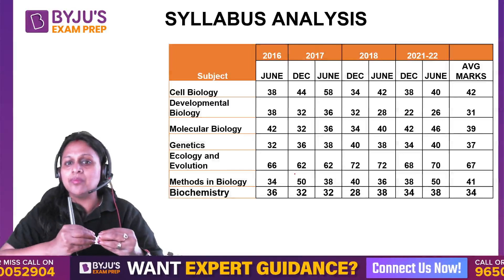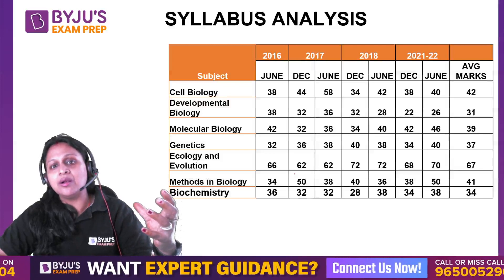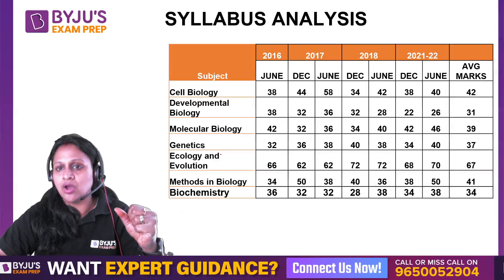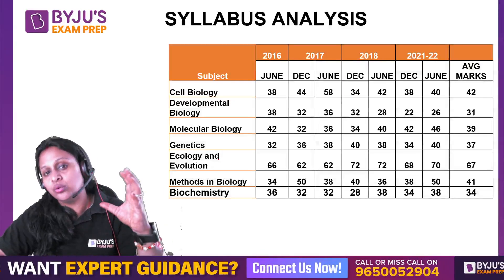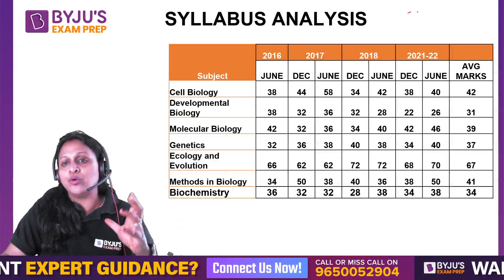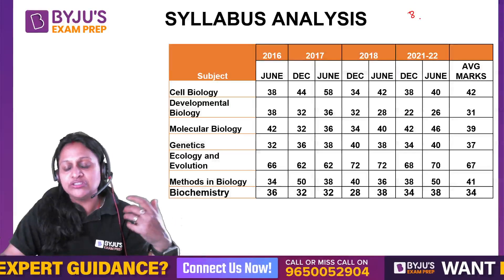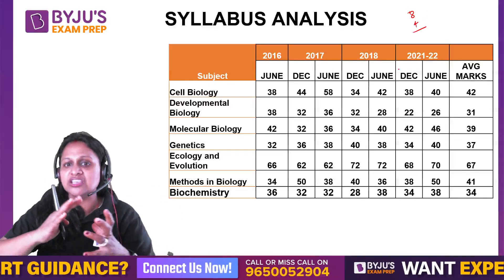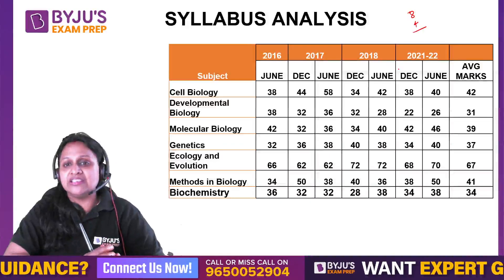In these 7 units there are few variations compared to other units. In Section B there are approximately 2 questions giving 4 marks, and in Section C there are 2 questions giving more than 8 marks. So if there are 10-12 marks extra from a unit, that unit can be considered a good unit marks-wise and weightage-wise.